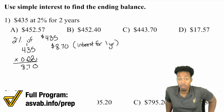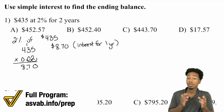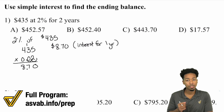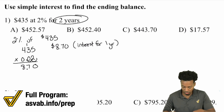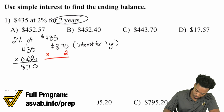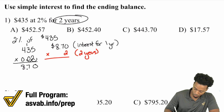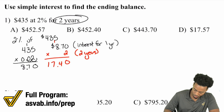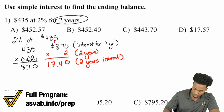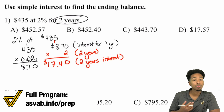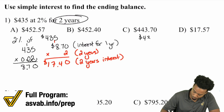And again, this is simple interest — what I'm about to do here does not count for compound interest. We have interest for one year. To find interest for two years, what we will do is multiply this by 2. So $8.70 times 2 gives us $17.40. This is two years of interest. What you'll do is add that back — the $17.40 — to the original amount, and that's it. You're set.